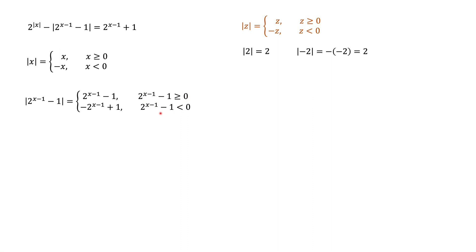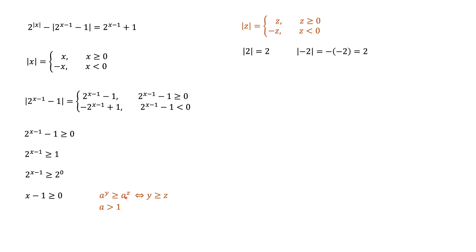We want to convert the condition on the expression into a condition on x. We add 1 to both sides of the inequality 2^(x−1) − 1 ≥ 0, which gives 2^(x−1) ≥ 1. Recognizing that 1 = 2^0, we now have 2^(x−1) ≥ 2^0 — both sides are exponentials with base 2. This is satisfied if and only if x − 1 ≥ 0, because for a to the power of y ≥ a to the power of z with a > 1, this holds if and only if y ≥ z.